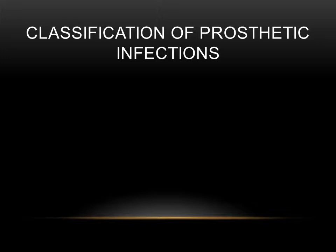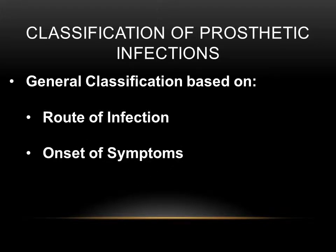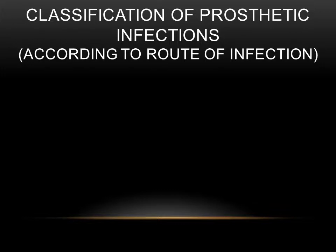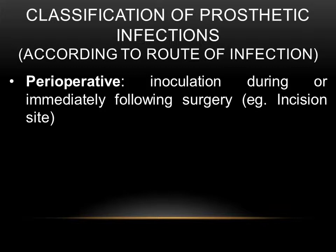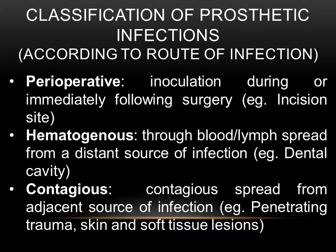Infections of breast implants are described under the general classification of prosthetic device infections, based on either the route of infection or the onset of symptoms. The classification according to route of infection is divided into three categories: perioperative, which is inoculation during or immediately following surgery such as an incision site infection; hematogenous, which is through blood or lymph node spread from a distant source such as a dental cavity; and contagious, which is spread from adjacent sources such as a penetrating trauma wound or skin or soft tissue lesions.